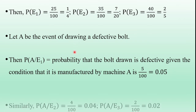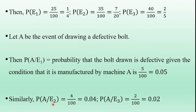Similarly, P(A|E2) = 4/100 = 0.04, and P(A|E3) = 2/100 = 0.02.